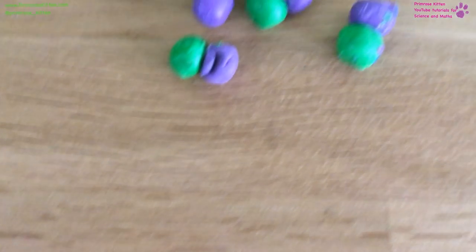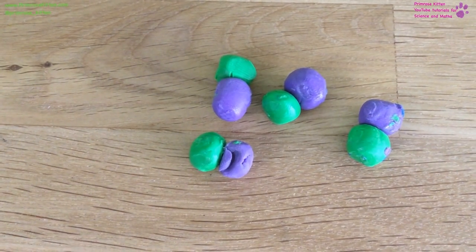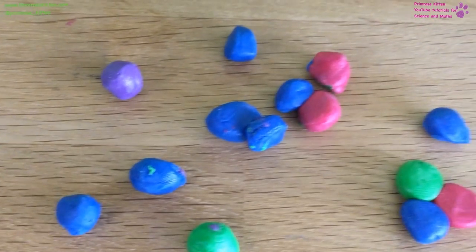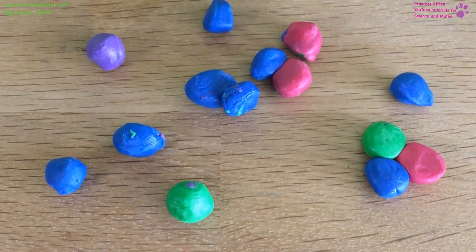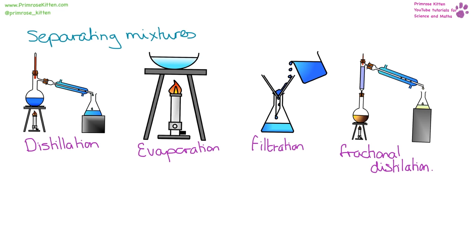Elements are pure things. Compounds are two or more different things chemically bonded together. A mixture is lots of different things, some of them chemically bonded and some of them not. When you have mixtures and want to separate them, there are a number of different techniques: distillation separates by boiling points; evaporation removes the liquid leaving dissolved solids; filtration separates large solid particles from liquid using filter paper; and fractional distillation takes things off at different boiling points.